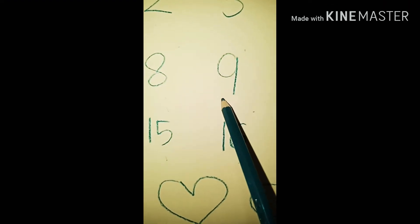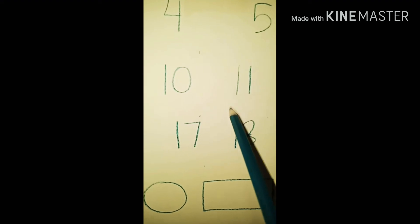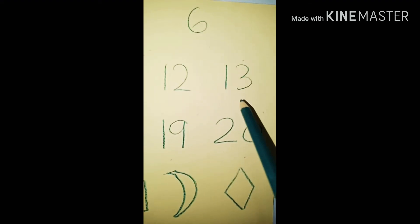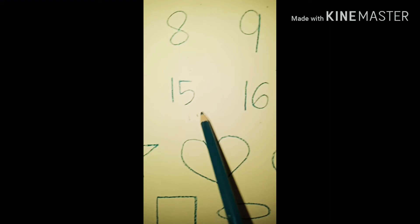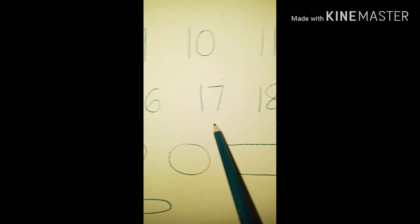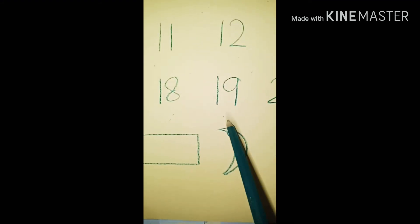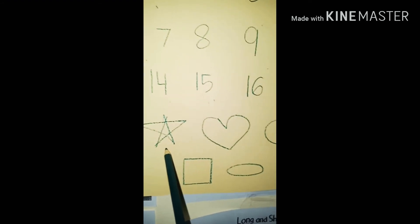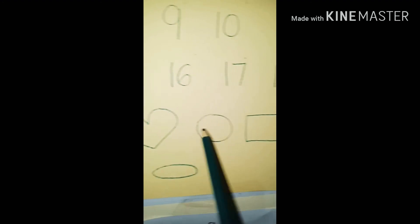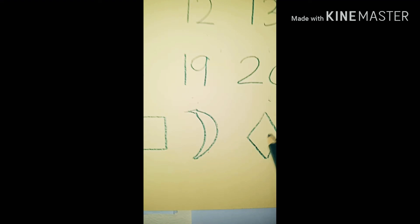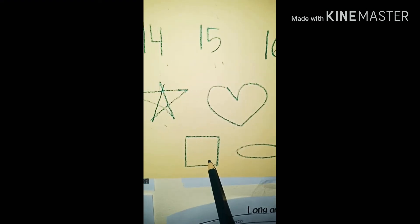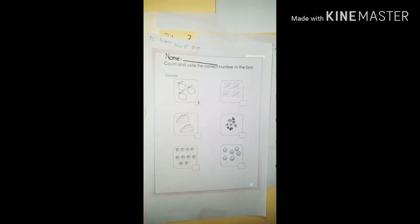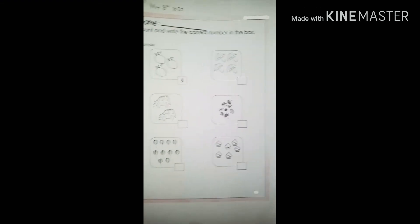Now, what shape is this? This is a star. This one — heart, circle, rectangle, crescent, diamond, square, and oval. Now I want you to count and write the number like the example.